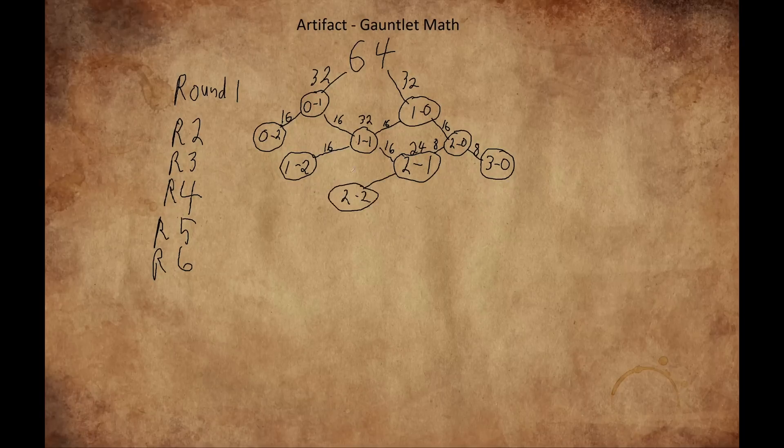Round 4, 12 players lose out at 2 and 2, 16 end up at 3 and 1, and just 4 stay undefeated at 4 and 0.